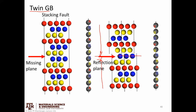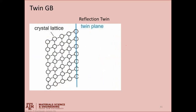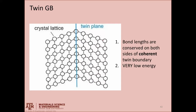Now I'm going C, B, A, C, B, A. So this is an example of a twin called a reflection twin. We also have rotation twins, where one side of the twin boundary is related to the other by an axis of rotation. The thing that makes twin grain boundaries special is that bond lengths are conserved on both sides of the twin boundary.